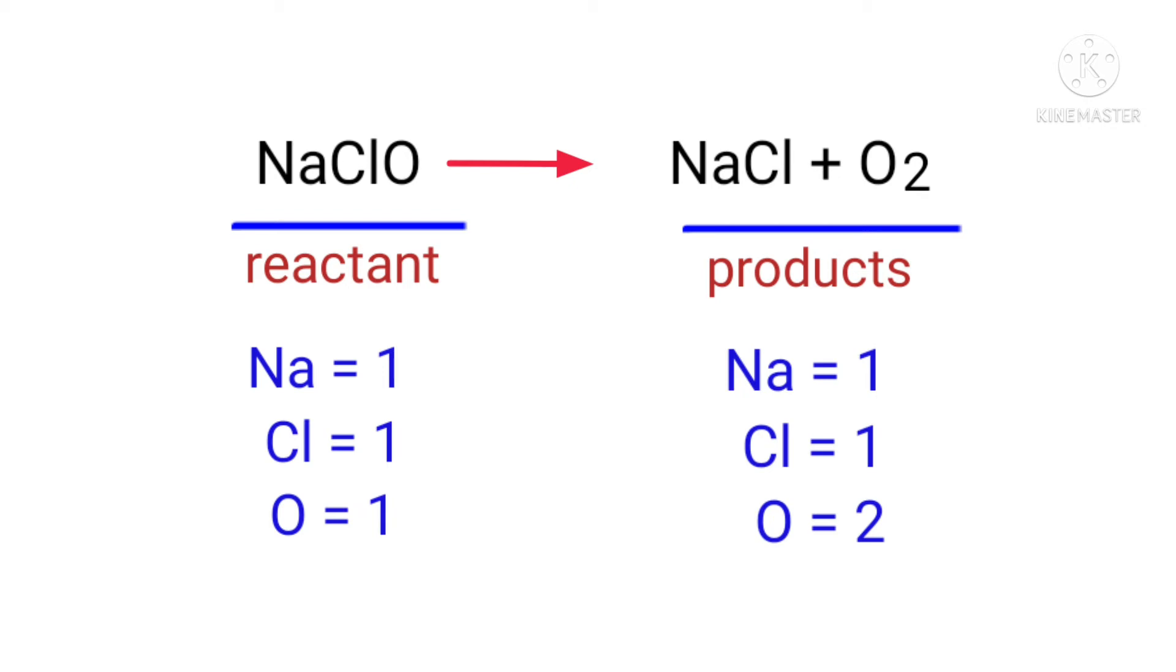In this equation we need to balance the oxygen atoms. To do this we need to put a coefficient of two in front of NaClO.